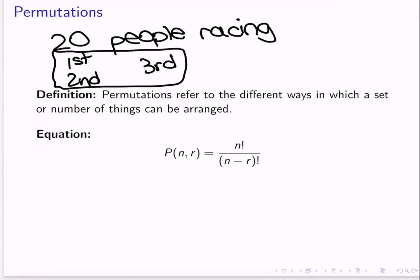Which one got first, which one got second, and which one got third absolutely does matter. As much as it's an honor to win any of those, you probably do care if you've won first, second, or third. So even if it's the same three people in the top three, the order that they win in does matter. It's still a different arrangement if person A gets first, person B gets second, and person C gets third, versus if C gets first, B gets second, and A gets third — that is different, absolutely.